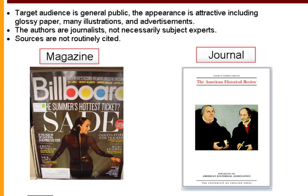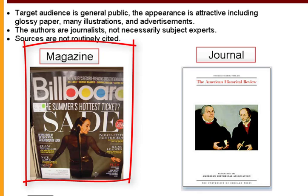A magazine differs from journals in a number of ways. Their target audience is a far broader general public. The appearance of magazines is often attractive, includes glossy paper, many illustrations, and many advertisements. The authors of the articles within magazines are usually journalists and not necessarily subject experts, though sometimes a journalist has definitely built up a subject interest. And the sources within the magazines are not routinely cited.